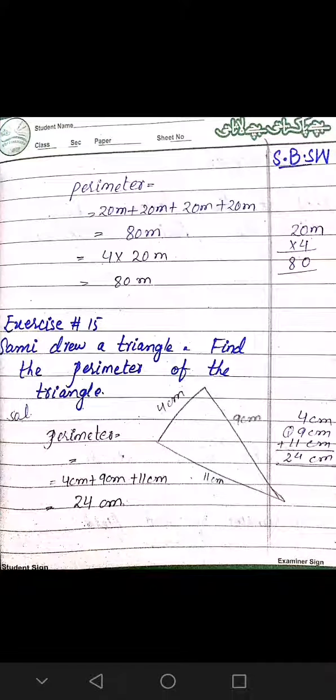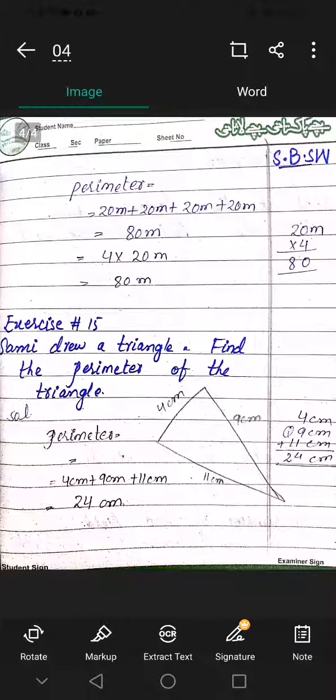Each side is 20 meters, so definitely when all sides are equal and all sides are given as 20 meters, we have to add 20 plus 20 plus 20 plus 20. We can also multiply it: 4 times 20 equals 80 meters.